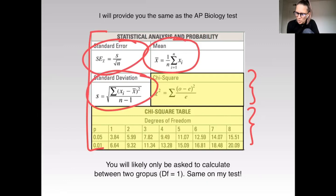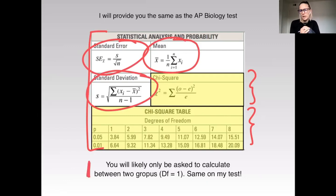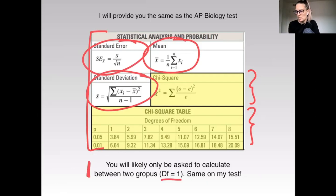You will most likely on an AP test or on my test be asked to calculate between two groups. So your degrees of freedom will be one, and that'll be similar on my test — not because it's any harder, just because it takes a long time.